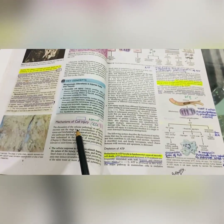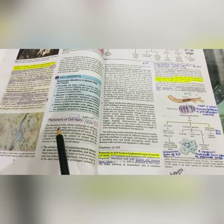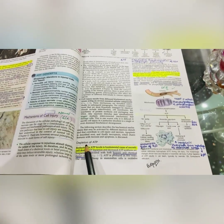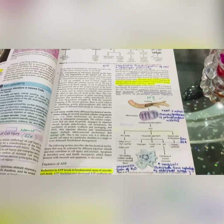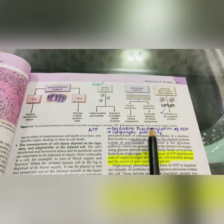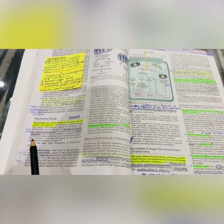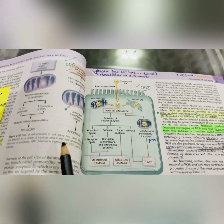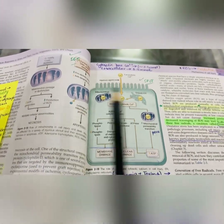Then we have the mechanisms of cell injury — SEQs come asking you to just enumerate them. For depletion of ATP, this diagram is important for SEQs, so just read this table. For mitochondrial damage, just do this diagram — it is important from the SEQ point of view.